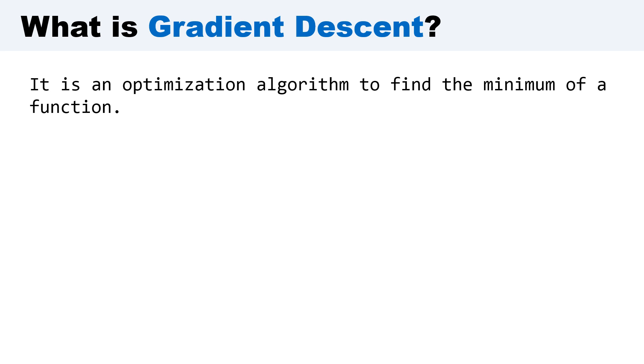First of all, we need to know what is gradient descent. It is an optimization algorithm to find the minimum of a function.